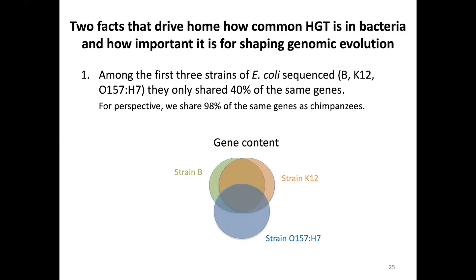There are two facts that really hit home how common horizontal gene transfer is in the microbial world. The first is that when we sequenced whole genomes of the first three strains of E. coli — strain B, strain K12, and strain O157:H7 — that last strain was found in Jack in the Box food and actually caused some fatalities from undercooked burgers.